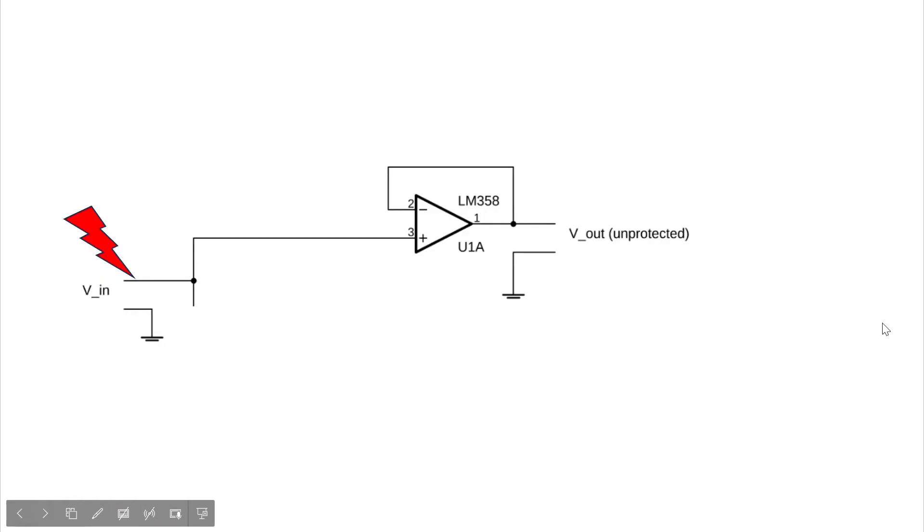The question we'll try to address in this video is, what happens when something goes wrong with the input? As an extreme example, what would happen if this op-amp were connected to 120 volts AC?